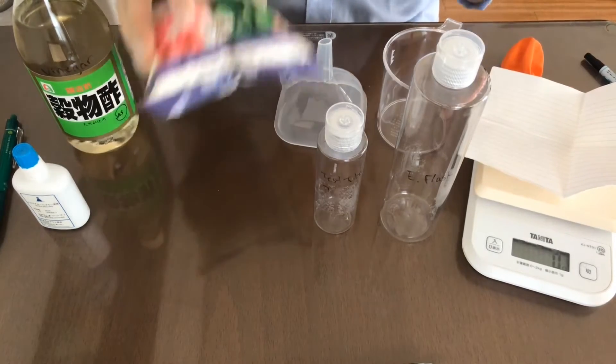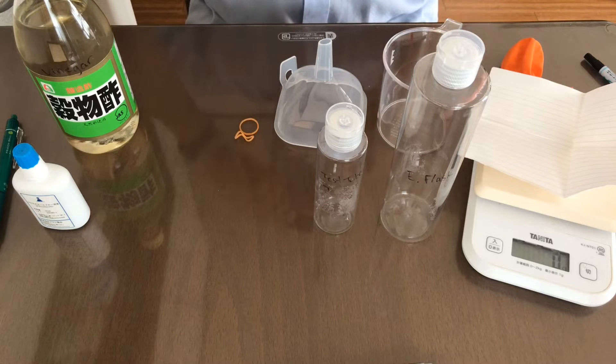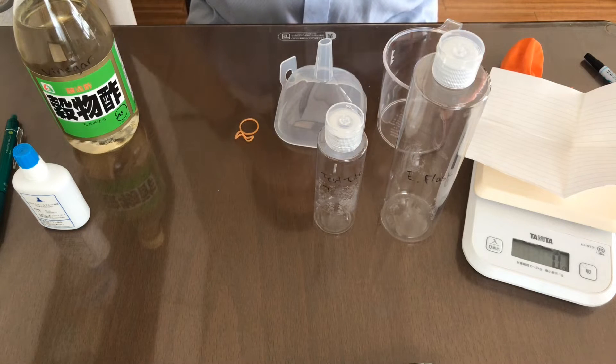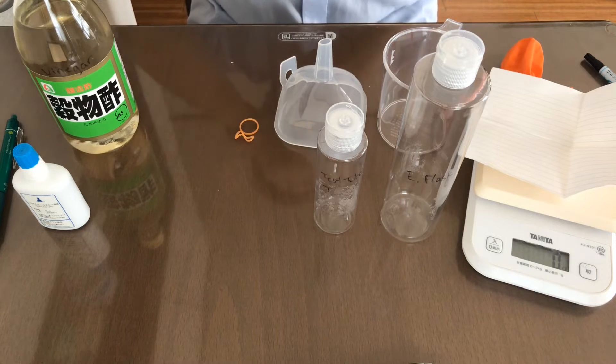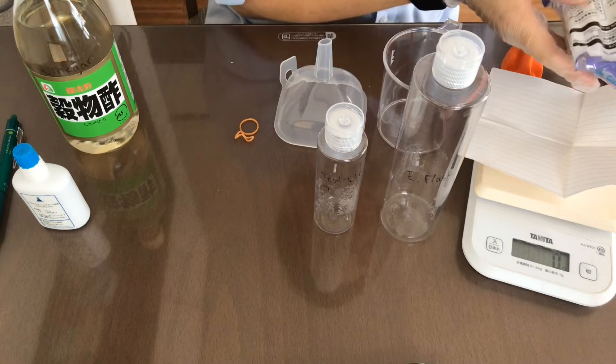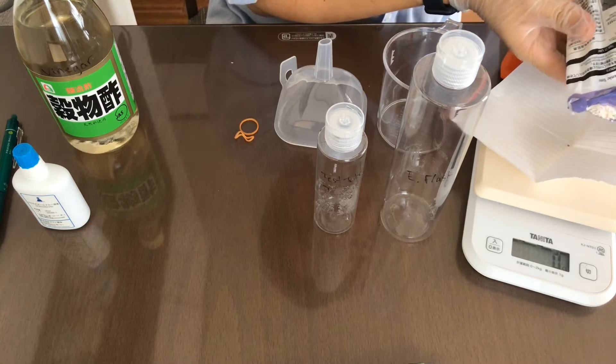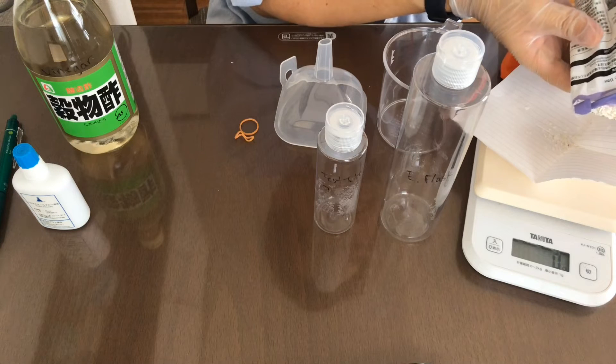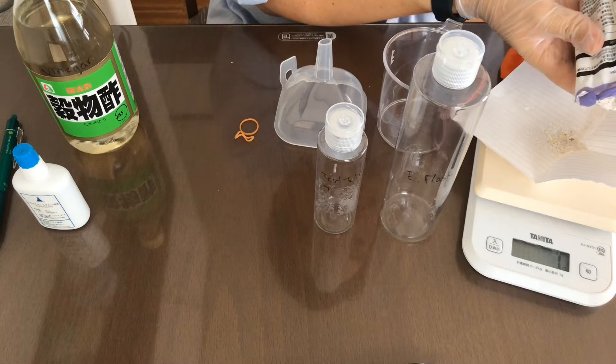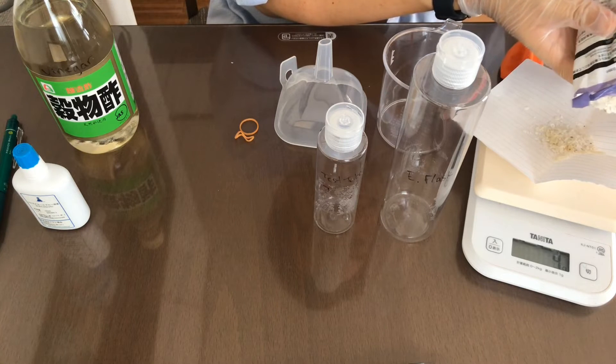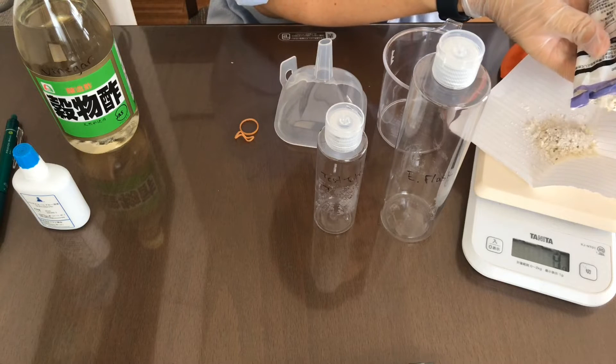We open up the calcium carbonate. Slowly you can pour it in until you get 15 grams of calcium carbonate. You always have to pour slowly and gently. The one I'm using are little shards of calcium carbonate.